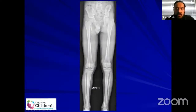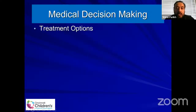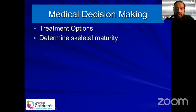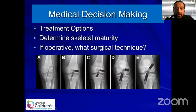This is his full-length x-ray, which we get on every patient at baseline, especially those who are skeletally immature — to look at alignment and to make sure they don't have any growth disturbances moving forward. The medical decision-making points are: what are the treatment options, how will we determine skeletal maturity, and if operative, what are the surgical techniques? There are so many that have been described.